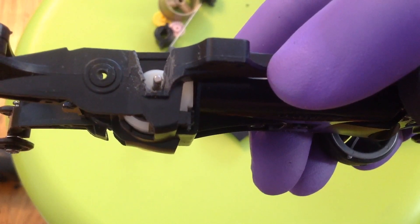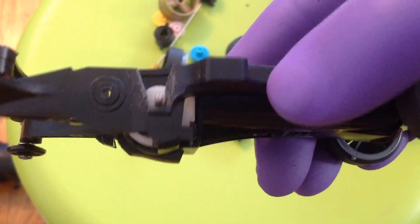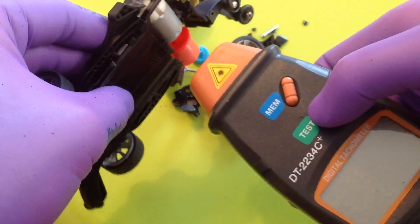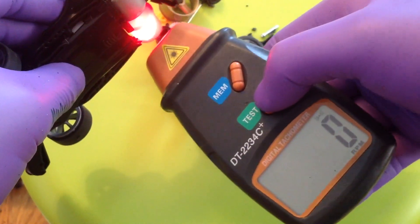I fixed the problem by trimming the chassis a little more so it does not touch the motor shaft. This time, without the friction, the RPM reaches 24,473 RPM.